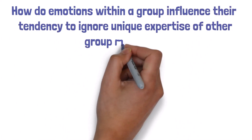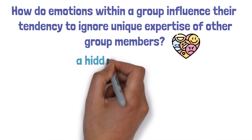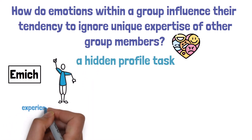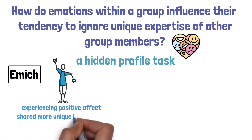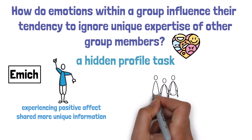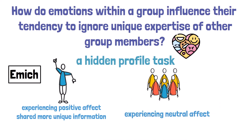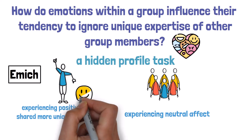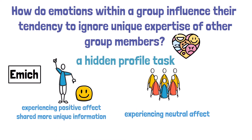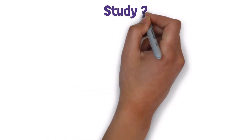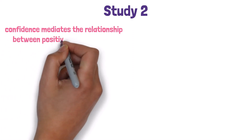Using a hidden profile task, Study 1 by Emich provided evidence that groups with at least one member experiencing positive affect shared more unique information than groups composed entirely of members experiencing neutral affect. This occurred because group members experiencing positive emotion were more likely to initiate unique information sharing as well as information seeking.